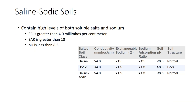Saline-sodic soils contain high levels of both soluble salts and sodium. EC is greater than 4.0 millimoles per centimeter, SAR is greater than 13, and pH is less than 8.5. The physical structure of these soils is normal. However, after periods of heavy rain and irrigation with low salt water, soluble calcium and magnesium may leach out of the soil, leaving behind sodium salts. Soil may then become sodic with poor physical structure and drainage.